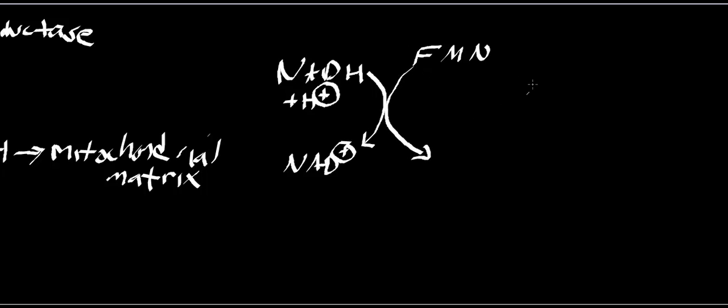The way we usually designate this: we're going to start with an oxidized flavin mononucleotide, and we're going to end up with a reduced flavin mononucleotide.